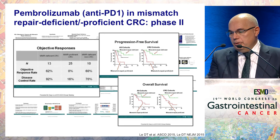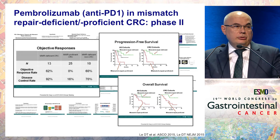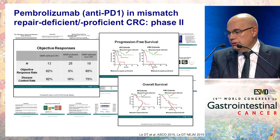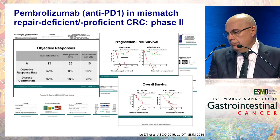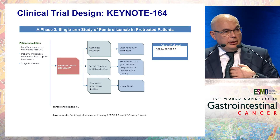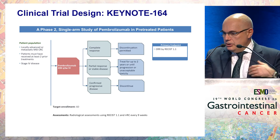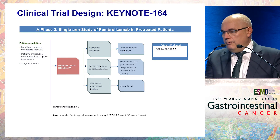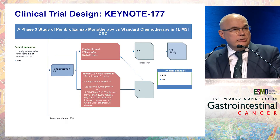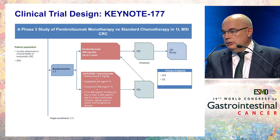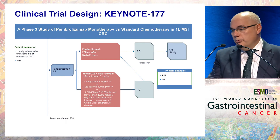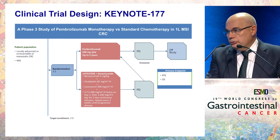That publication showed patients with colorectal cancer and mismatch repair deficiency had a 62% response rate with pembrolizumab, with outstanding overall survival and progression-free survival. This has led to several clinical studies to validate these findings — in the refractory setting with pembrolizumab as a single agent, and also a phase 3 study in the first-line setting comparing conventional chemotherapy with pembrolizumab versus pembrolizumab as a single agent. These studies are ongoing.